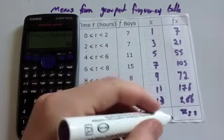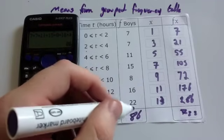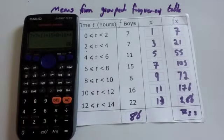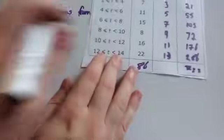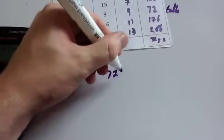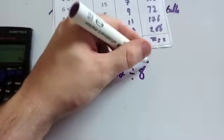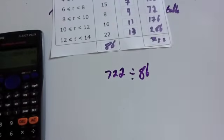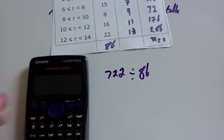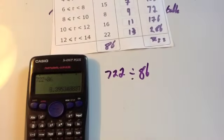We divide the grand total, 722, by 86, and that will give us the estimated mean. So the estimated mean is 722 divided by 86. 722 divided by 86 is 8.395348837.